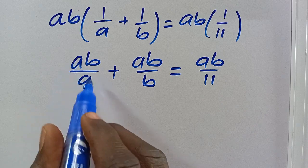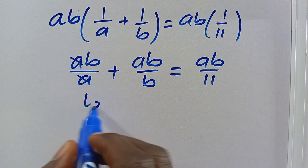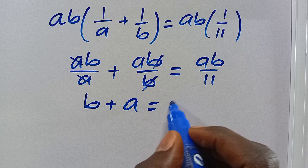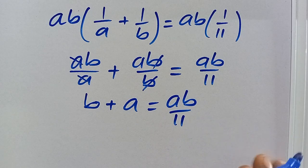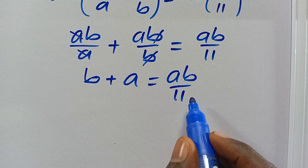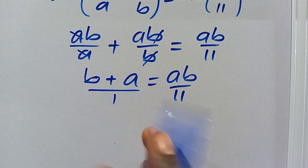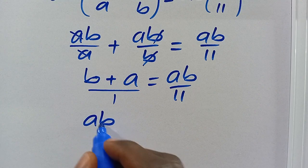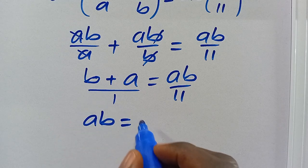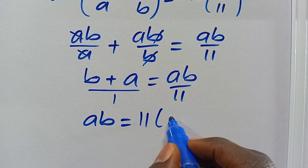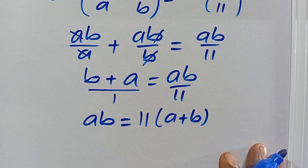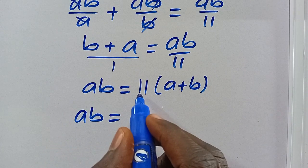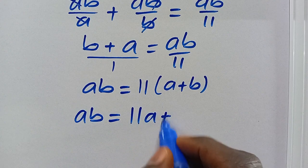From here, AB/A cancels to give us B, and AB/B cancels to give us A, so we have B plus A equals AB/11. Then let's cross multiply. AB times 1 gives us AB equals 11 times A plus B in parentheses, so AB equals 11A plus 11B.